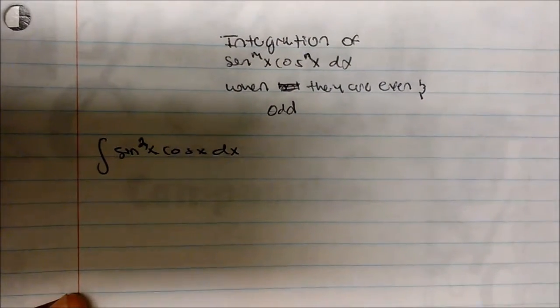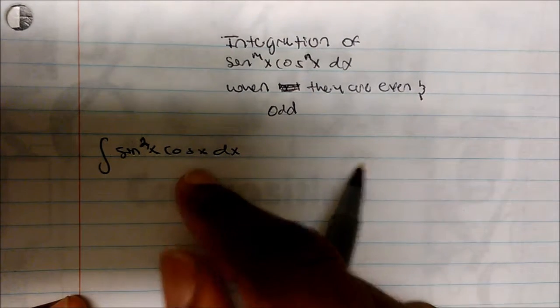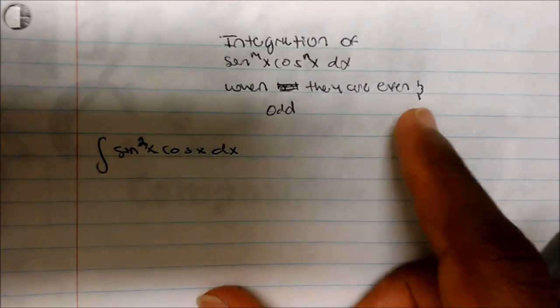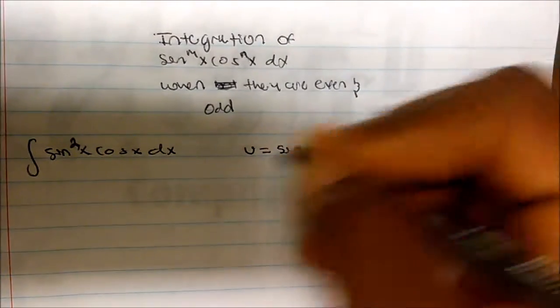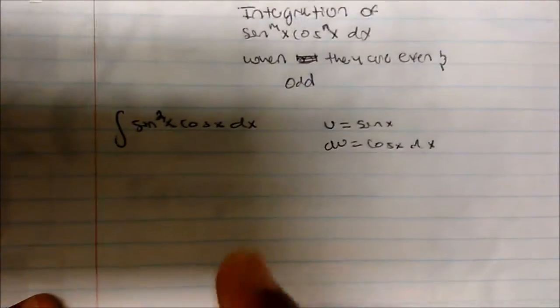So what if we wanted to integrate sine squared of x times cosine of x dx? You can see that our powers are even and odd — this is a square term, this is 1. This one is a simple one. You can definitely see that if I set u to be sine of x, then I have a cosine of x out here, and the derivative is actually cosine of x dx, which is exactly what we have here.